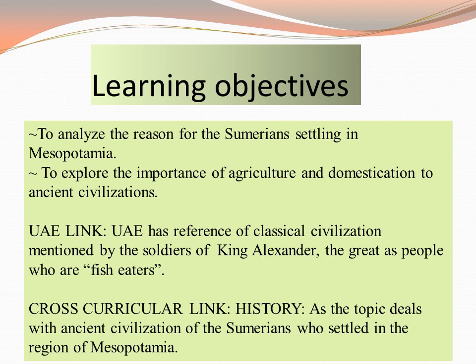When you see the UAE link, children, UAE has a reference of classical civilization. When we have done the lesson and we have come across the soldiers of King Alexander, he had mentioned about the people in the Gulf region as fish eaters. Next is the cross-curricular link, and that surely links with history, as the topic deals with the ancient civilization of the Sumerians who settled in the region of Mesopotamia.